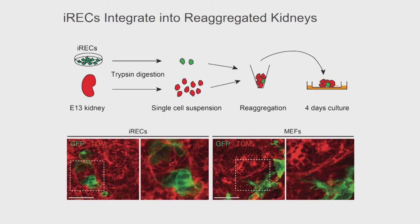But would they behave like tubule cells? We tested this side-by-side with real tissue, with real kidneys — basically dissociated embryonic kidneys — mixed in our reprogrammed cells again, and then looked where these reprogrammed cells ended up in these organoids. You can see that many of these reprogrammed cells ended up in tubular structures in these organoids.